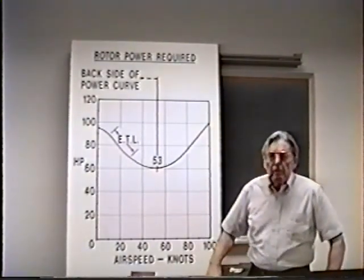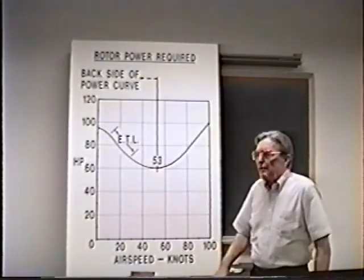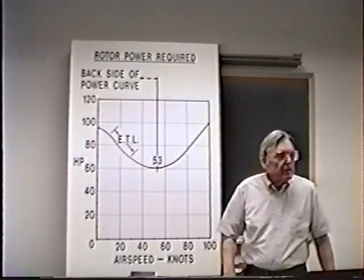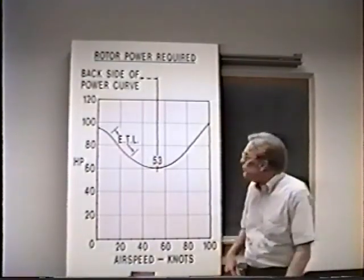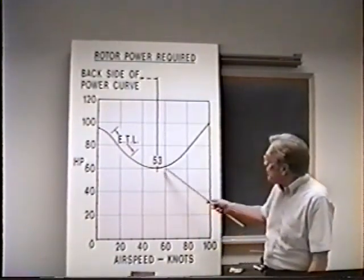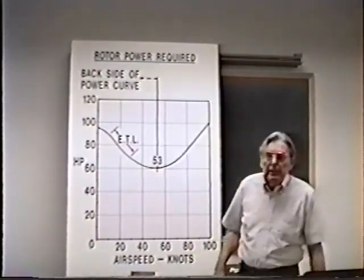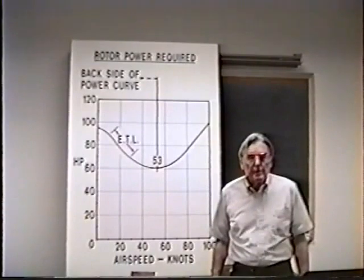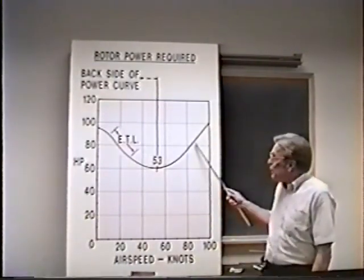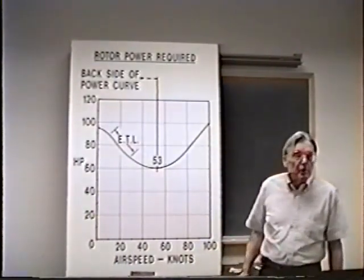There's a great deal of difference between operating an aircraft on the front side of a power curve and operating the aircraft on the backside of the power curve. On the front side of the power curve everything is quite normal, natural, and stable. It takes more power to go faster, less power to go slower.